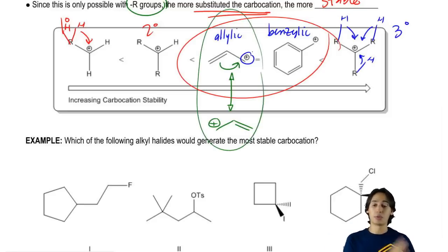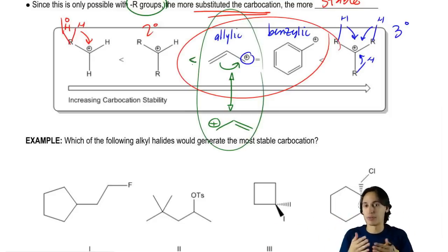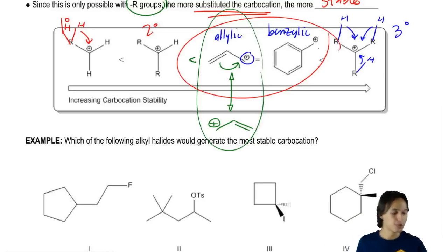Allylic carbocations are more stable than secondary because secondary, it's good, it's better than primary because it has the ability to donate with hyperconjugation but it doesn't have the resonance capability so it's not as good as allylic. Same with benzylic. Benzylic is also better than secondary.